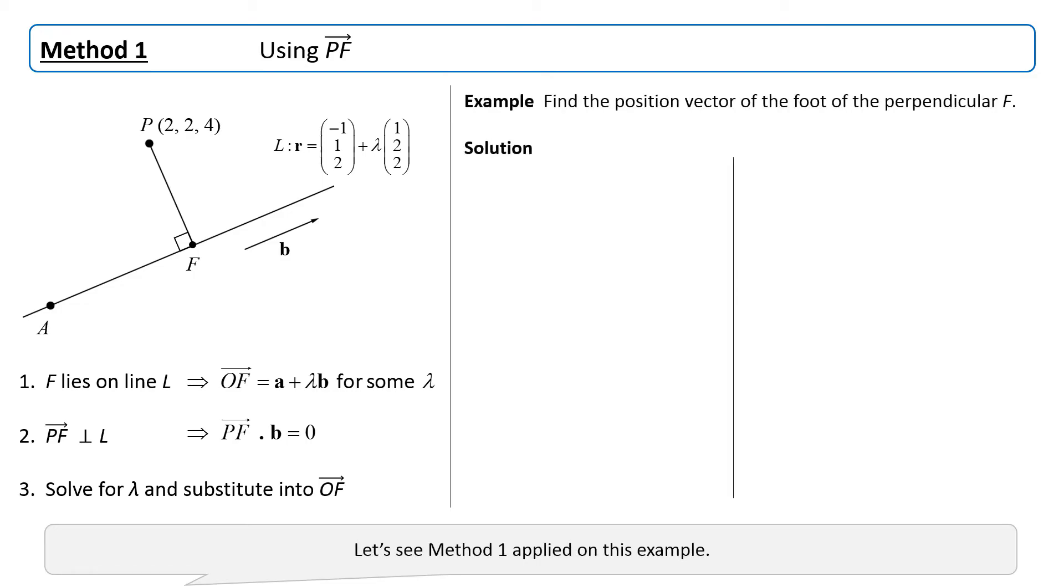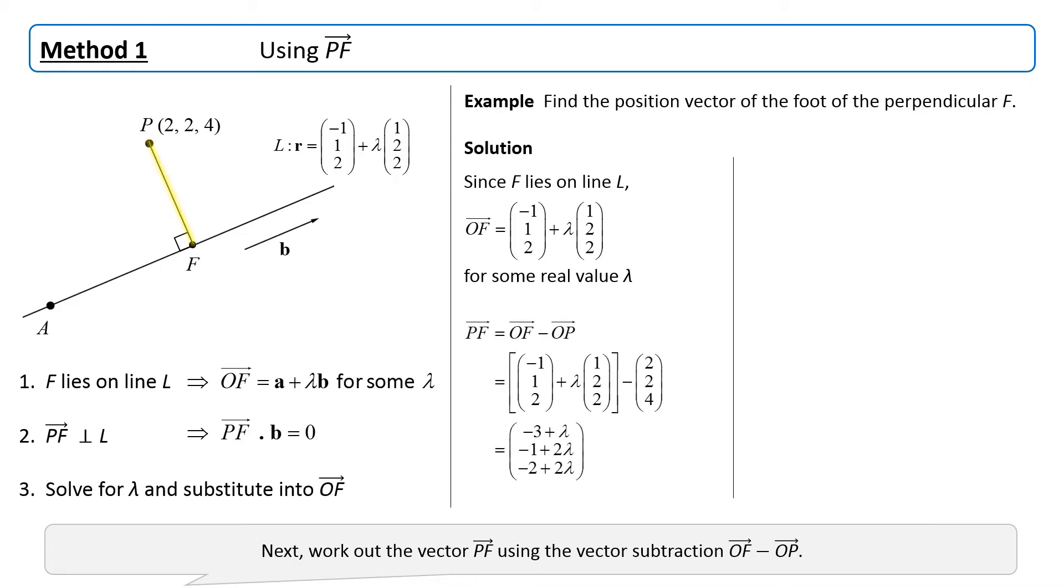Let's see method 1 applied on this example. Firstly, write down the position vector of F using the equation of line L. Next, work out the vector PF using the vector subtraction OF minus OP.